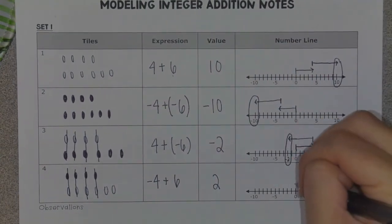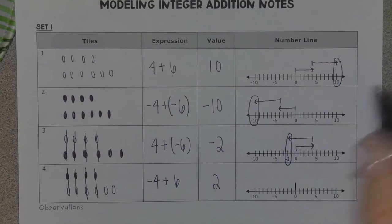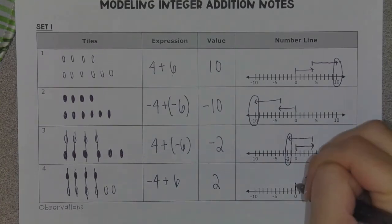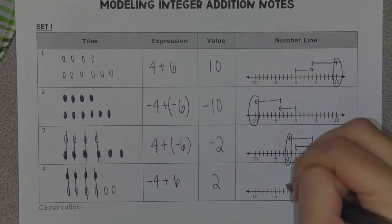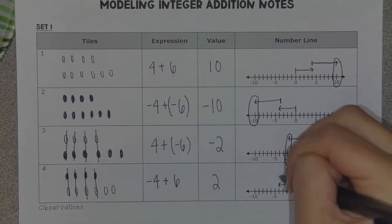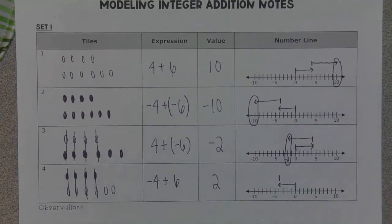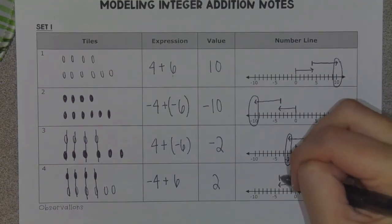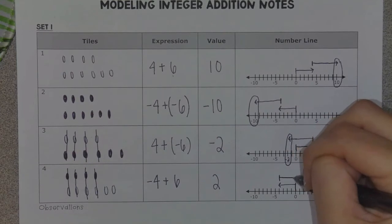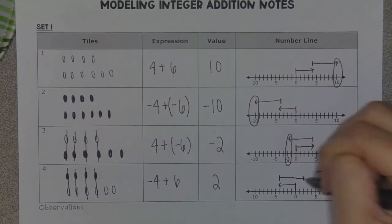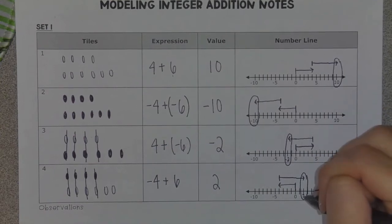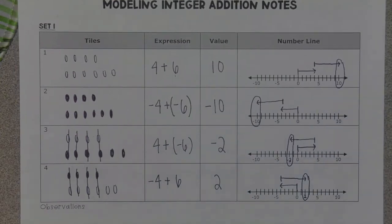When I do my number line, I'm going to start at zero. Since I have negative four, I'm going to move to the left four spaces. And then since I have positive six, I'm going to move to the right six spaces. Wherever it lands, that is my value — and it lands at positive two.